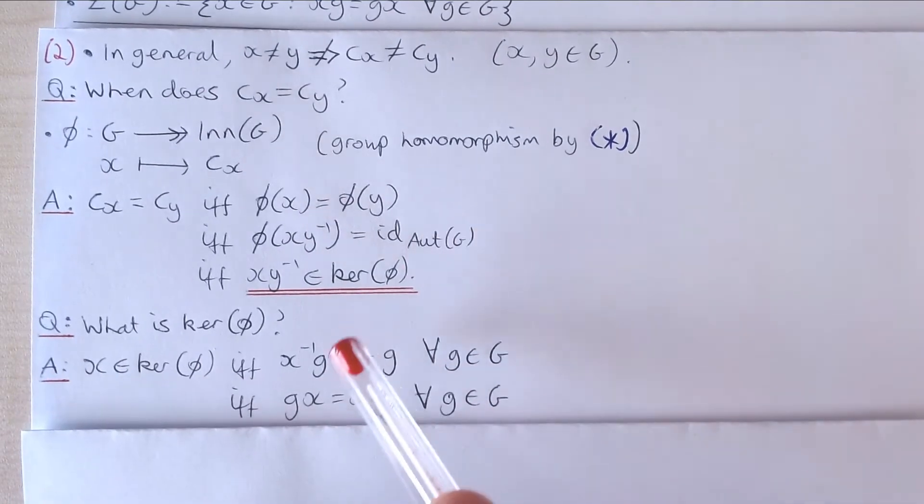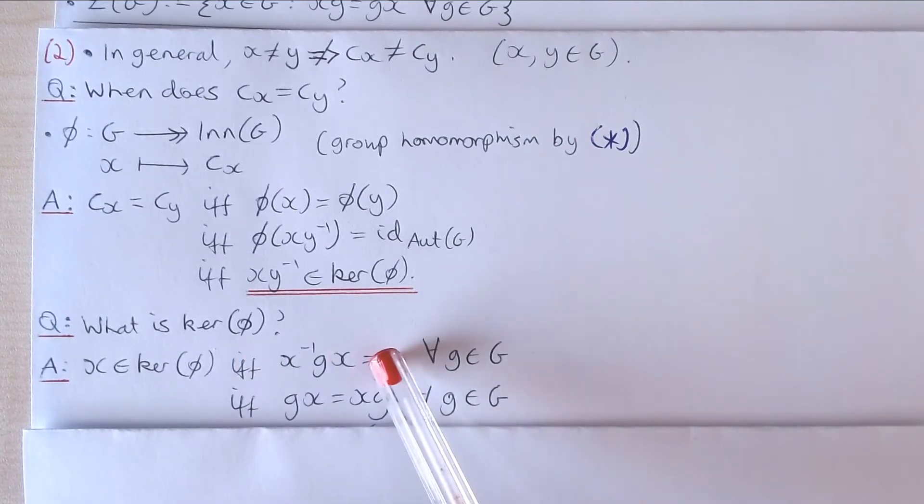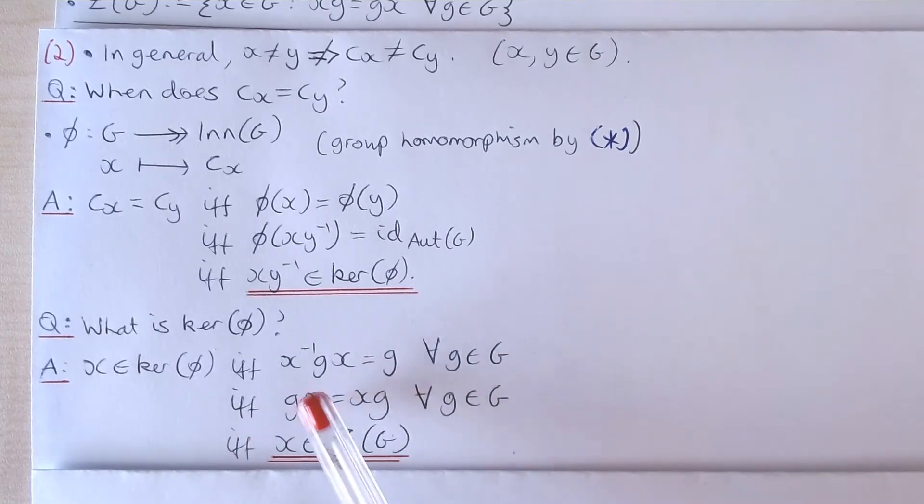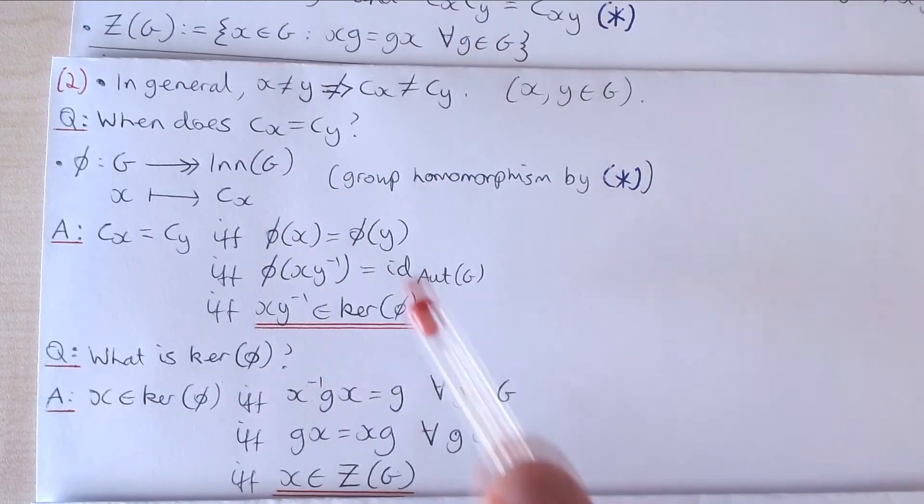But this statement holds if and only if gx equals xg for all elements g within our group G, because what we've done here is we've applied x to both sides of this expression. And this holds if and only if x is in the centre of our group G, as we recall from the definition of the centre.